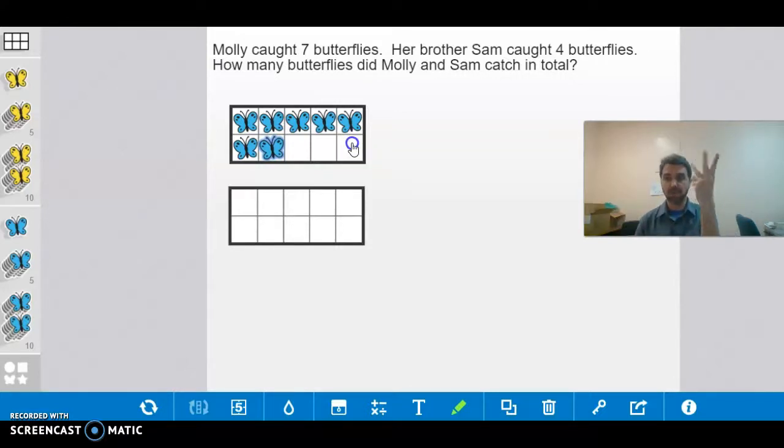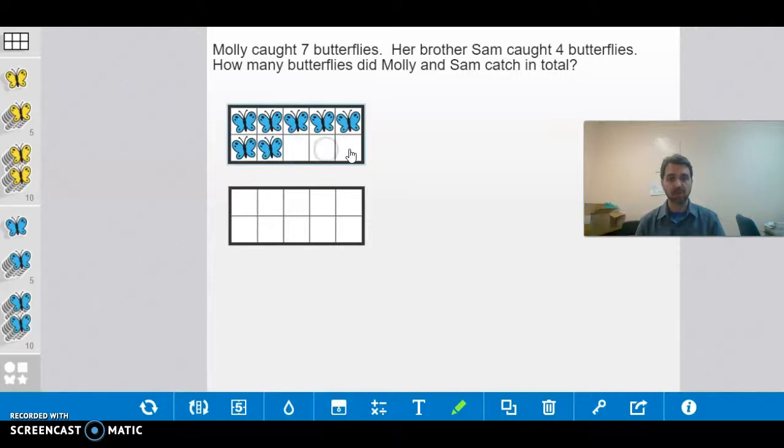So now we need to add the four butterflies that Sam caught. Let's say those are yellow. Okay, so remember, this is a butterfly net. You can only put 10 butterflies in this net. So how many more butterflies can we fit in that net without going over? Show me number of fingers. Is it one, two, three, or four? What do you think? Number of fingers? It's three. Yeah, we can see that. Look, one, two, three. So we're going to put three of the butterflies here that Sam caught. One, two, three. So if we put three of the butterflies there, how many, we still, we haven't put all the butterflies into a net. Sam caught four butterflies. So we still have how many left over? We still have one left over. So that would go into this net.